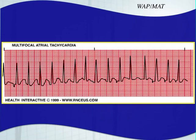Here's another example of multifocal atrial tachycardia. Remember WAP — wandering atrial pacemaker — looks exactly the same, it's just slower than 100 beats per minute. Now you might be saying you don't see P waves over here, and you're right — you can't see them because the rhythm is too fast. But you do have a P wave here — it's in that T wave, we talked about that before. The same thing happens here — that extra bump in the T wave is the P wave. The fact that this is so irregular indicates this is possibly a multifocal atrial tachycardia.